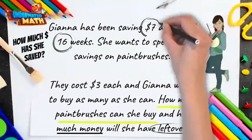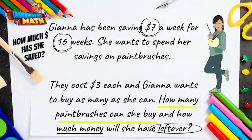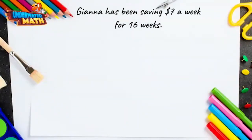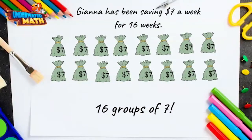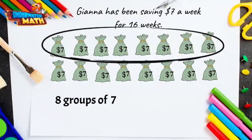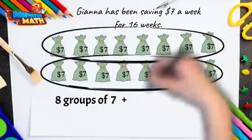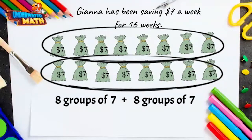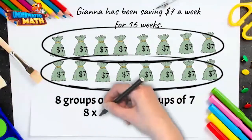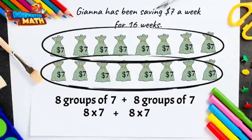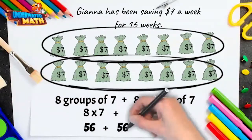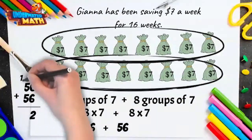Let's visualize what her savings looks like. This is 16 weeks worth of seven dollars, which is really just 16 groups of seven. We can break this up into eight groups of seven plus another eight groups of seven, which is the same as eight times seven plus eight times seven — so 56 plus 56.